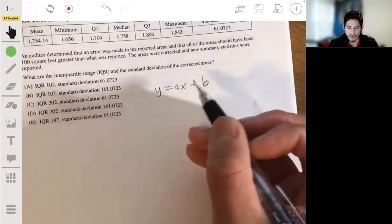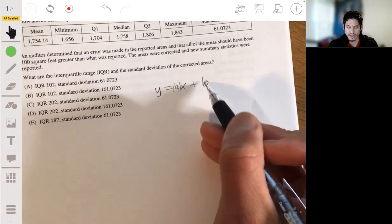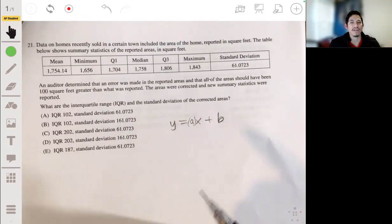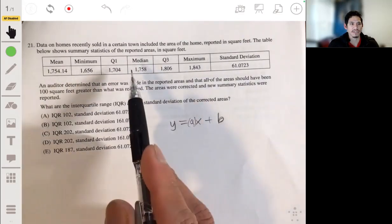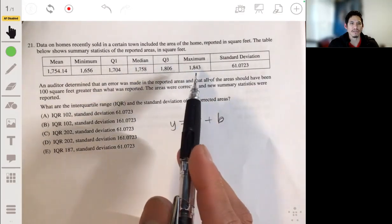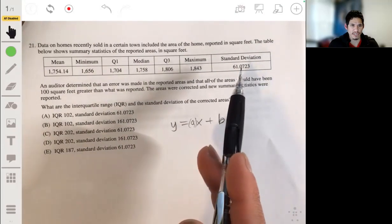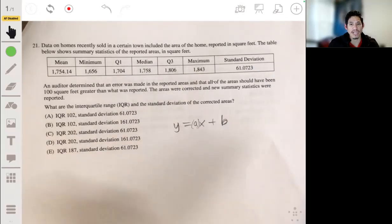When you just add a number to all the data values, so if you add like a hundred feet to everything, it's not going to change the measures of spread. It'll change actual values, but it doesn't change measures of spread. So it's going to change the mean, it's going to change the minimum, it'll change all these values by adding a hundred, but it won't actually change the standard deviation and it won't change the range.